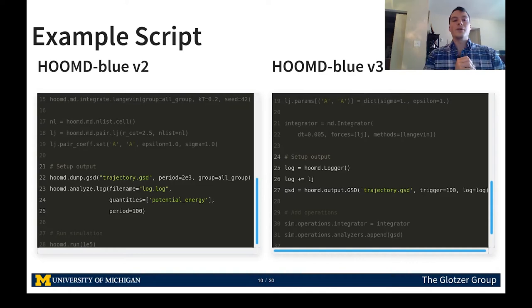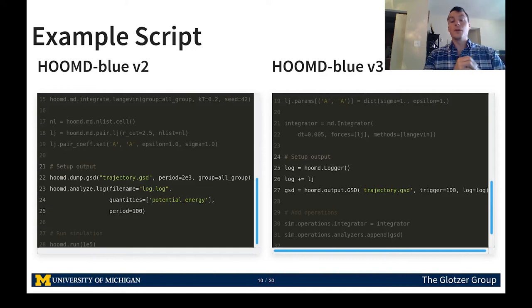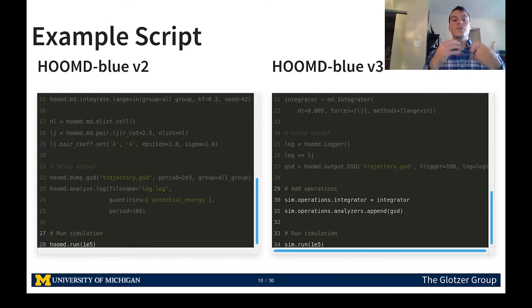We create different means of outputting data for later analysis and visualization. In version 2, a GSD file and a log file are created separately. In version 3, we add a logger object to the GSD object, so the GSD file output can now store log data — meaning particle positions and potential energy can be stored in the same file. Finally, we run the simulation. In version 3, we explicitly add the operations we wish to run before calling run.